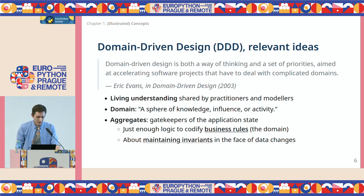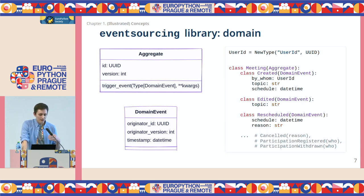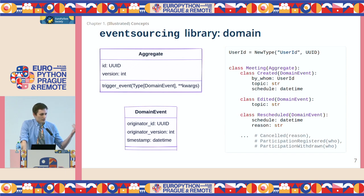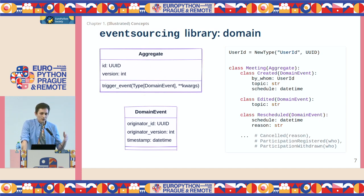So what do we get when we mix event sourcing and domain-driven design? I'm going to quickly show you with an example using the event sourcing library. That's a high-level view of the core domain classes — the aggregate and the domain events. On the left, those two classes are basically meant to be derived — they're just parent classes with metadata. On the right, you can see how I'm using it. What can happen to a meeting? A meeting can be created by somebody about a topic, it has a schedule, it can be edited, it can be rescheduled, cancelled, and so on.